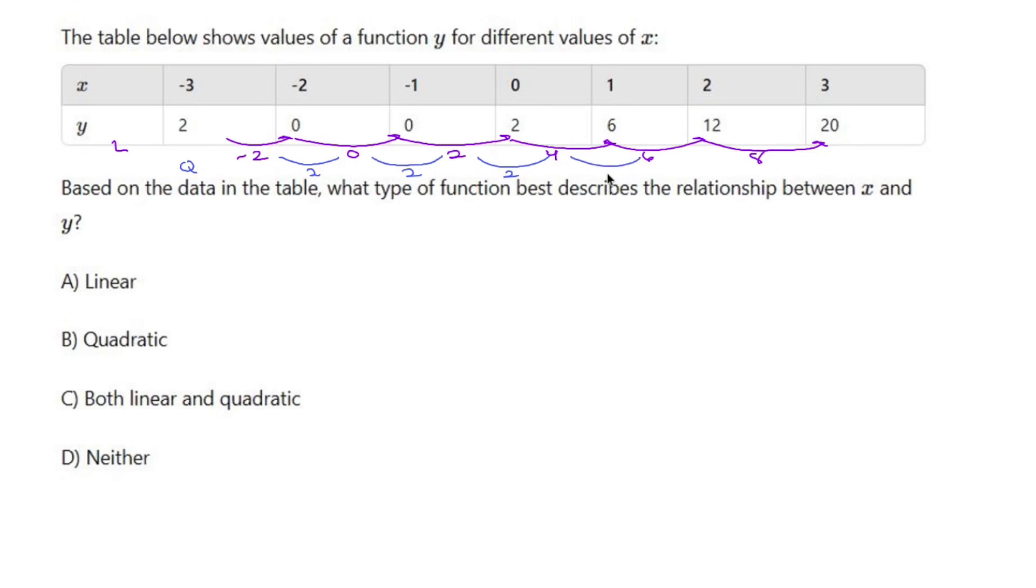2 to 4, add 2. 4 to 6, add 2. 6 to 8, add 2. Since the average rate of change of the rate of change is a constant number, this is quadratic.